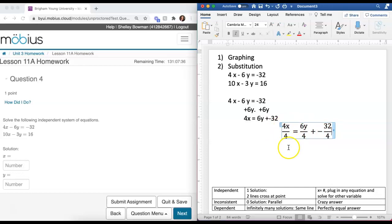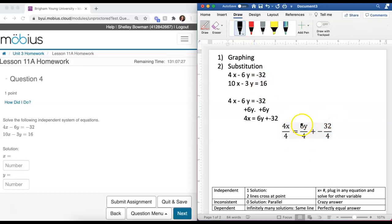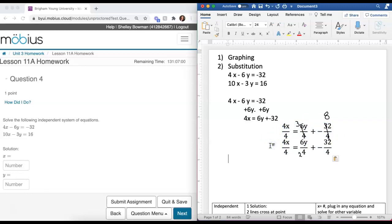On the left-hand side, 4 divided by 4 cancels out, and I'm just left with x. To simplify 6 over 4, I can divide both of them by 2, which gives me 3 halves. 32 divided by 4 divides out to a whole number of 8. So x equals 3/2 y minus 8.